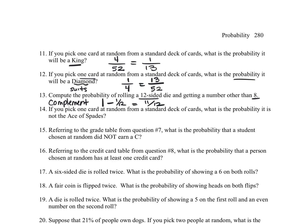For 14, if you pick one card at random from a standard deck of cards, what is the probability it is not the ace of spades? So the ace of spades is only one card out of 52. So again, it's like the complement, and we could just take 1 minus that, which would be 51 out of 52.